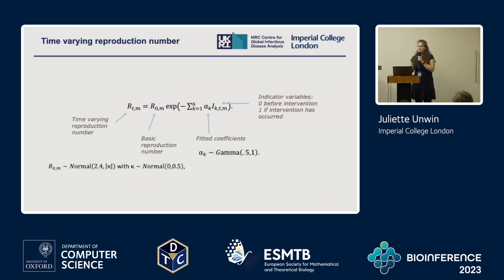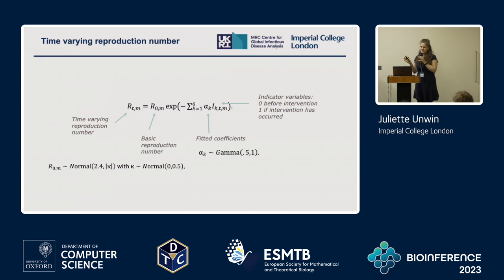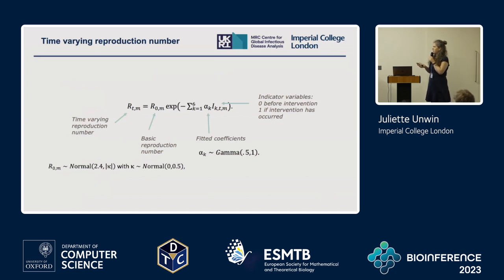One of the things we were really interested in was not only getting an estimate for R_t but also looking at what was impacting R_t. The first thing we looked at was step changes from different interventions. If you're in the UK, you had things like being sent home from work, gathering closures, and eventually lockdown. We parameterized R_t with a basic reproduction number representing disease dynamics in the naive population, then an exponential relationship with indicator variables as step changes for different interventions.